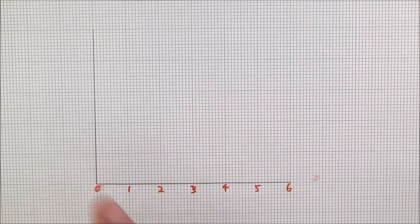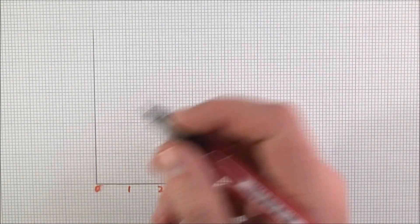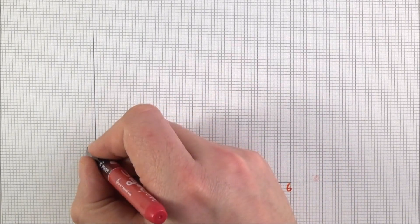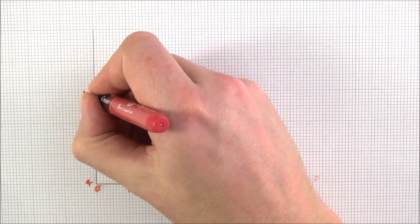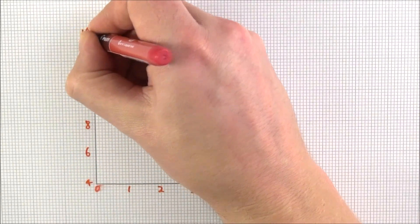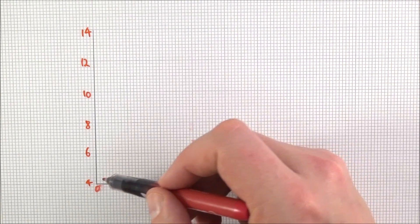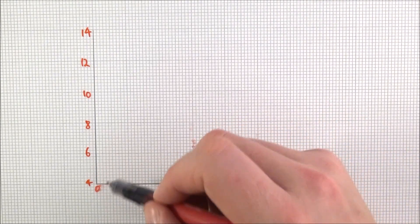Now you don't always have to start at 0. You might start perhaps at maybe 4 and you go up to 6, 8, 10, 12 and 14. So you don't need to start at exactly 0 when you're labeling the axis.